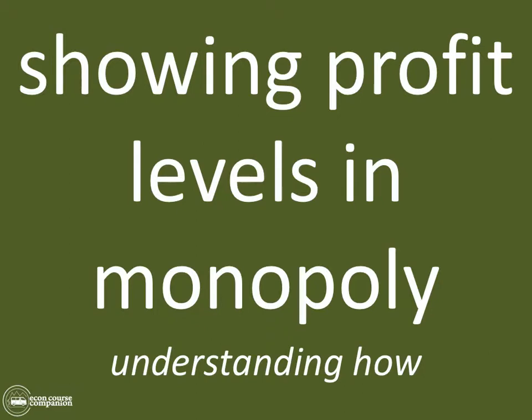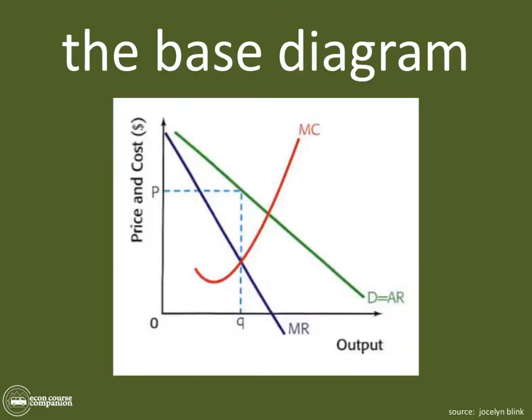It's actually quite easy once you get a hold of what the diagram looks like. I've created this notion of a base diagram that I think is going to be super helpful. No matter the level of profit the IB asks you to show — whether it's abnormal profits, losses, or normal profits — you start with this base diagram. This base diagram is your best friend for showing profit levels in monopolies, monopolistic competition, and oligopoly, with a little caveat about the kinked demand curve, which we'll get to later.